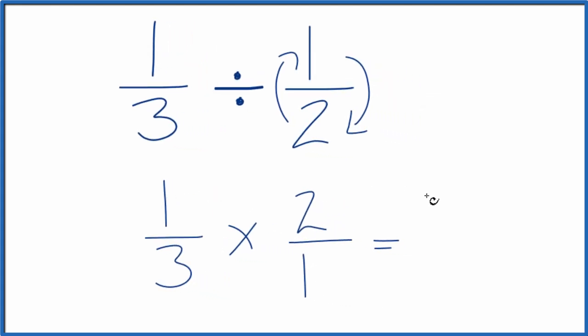And now we just multiply. One times two is two. Three times one is three. And we get the answer two-thirds.